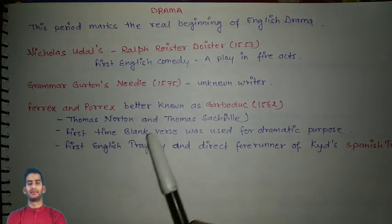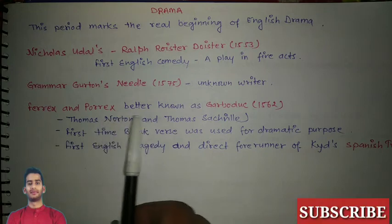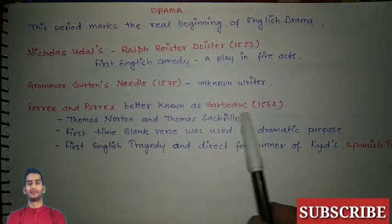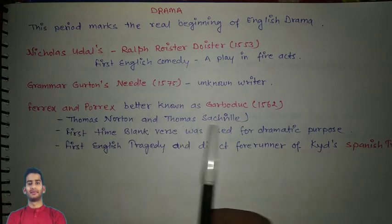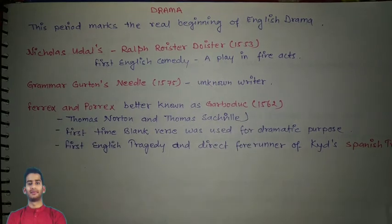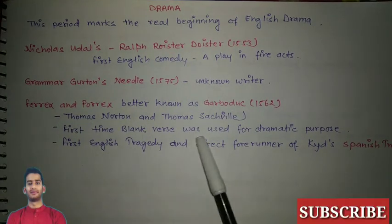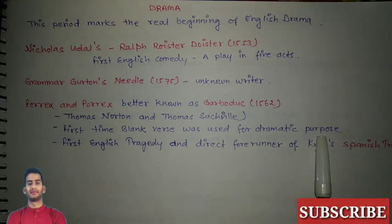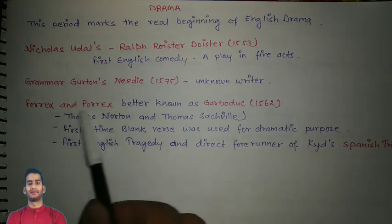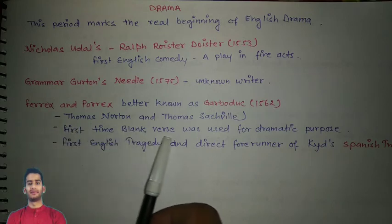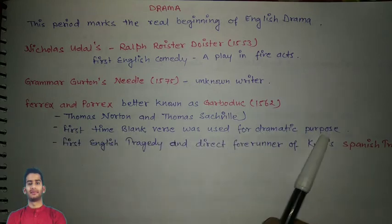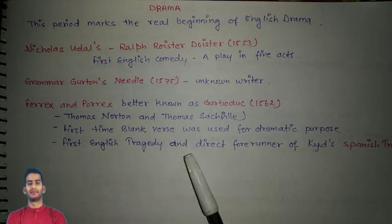'Gammer Gurton's Needle' dates to 1575 and has an anonymous writer. 'Ferrex and Porrex,' better known as 'Gorboduc,' was written in 1562 by Thomas Norton and Thomas Sackville. Its importance is that blank verse was used for dramatic purpose for the first time, making it the first English tragedy and a forerunner of Kyd's 'The Spanish Tragedy.'